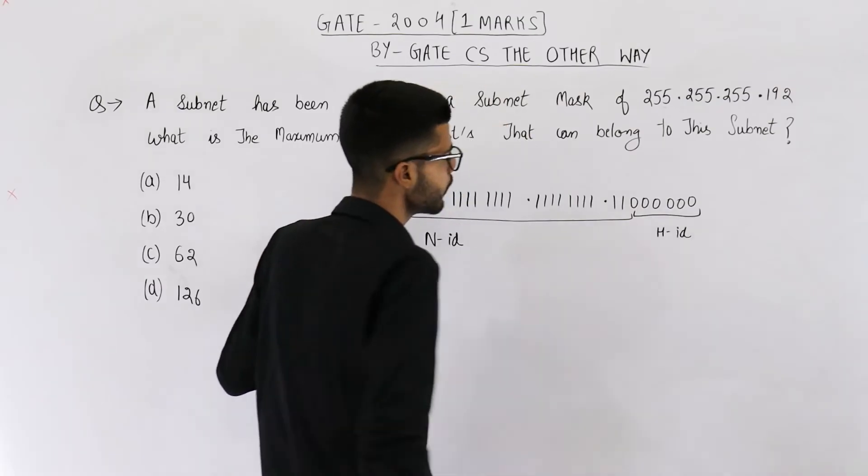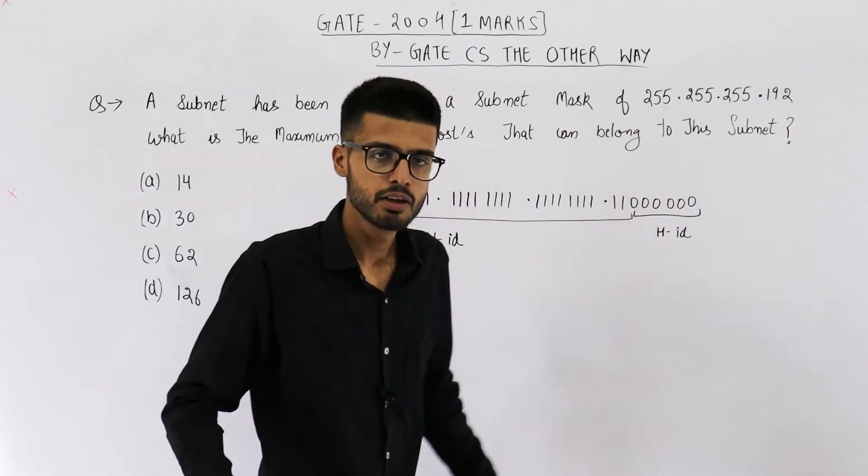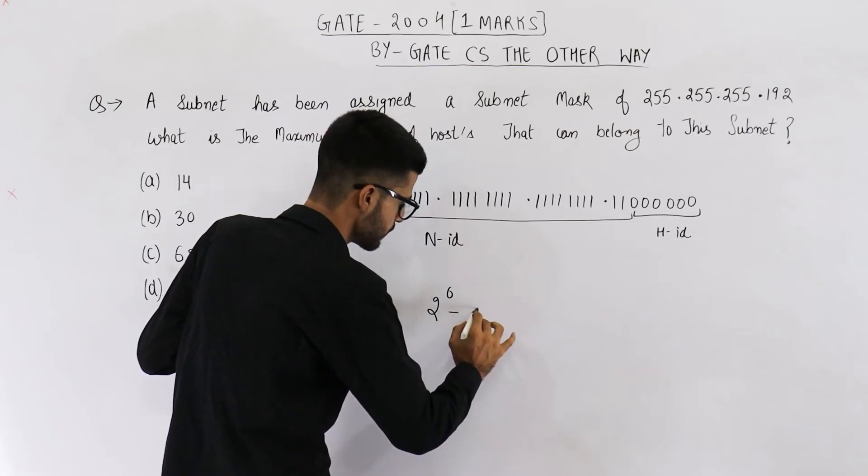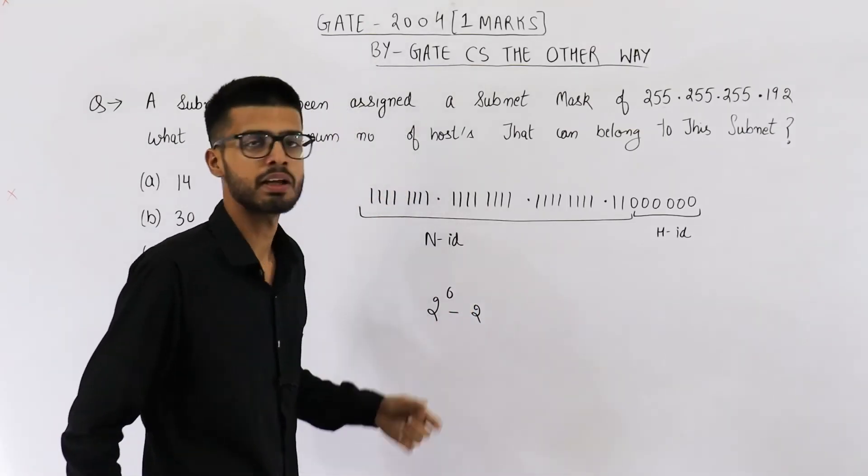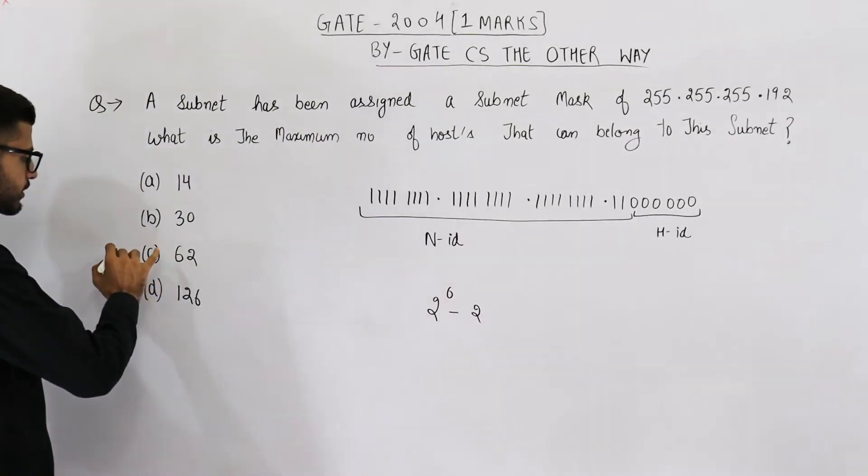Now, how many bits are there in host ID part? We have 6 bits. So, you can configure maximum 2 raised to the power 6 minus 2 hosts. So, answer is 64 minus 2. That means 62. Option C is correct here.